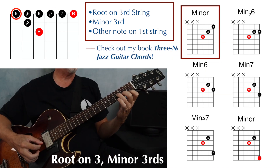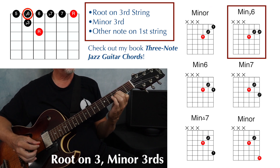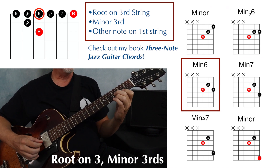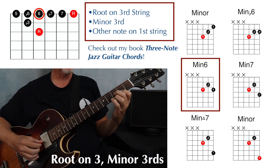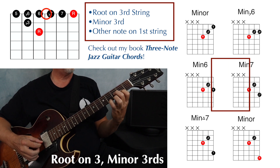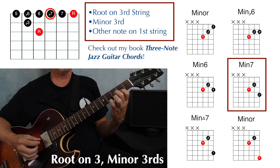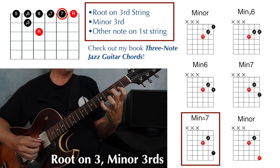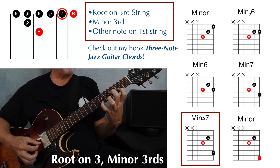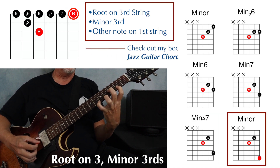Here's that entire sequence: minor, minor with a flat six, minor six or diminished seven depending on context, minor seven or minor seven flat five depending on context, minor with a major seven, and then another minor chord.